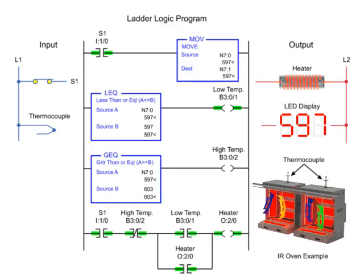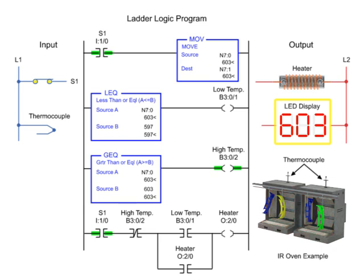In this on-off temperature control example, the heater turns on when the temperature falls to or below 597 degrees and turns off when the temperature reaches 603 degrees or more. To control the circuit, S1 is programmed in the heater output circuit.